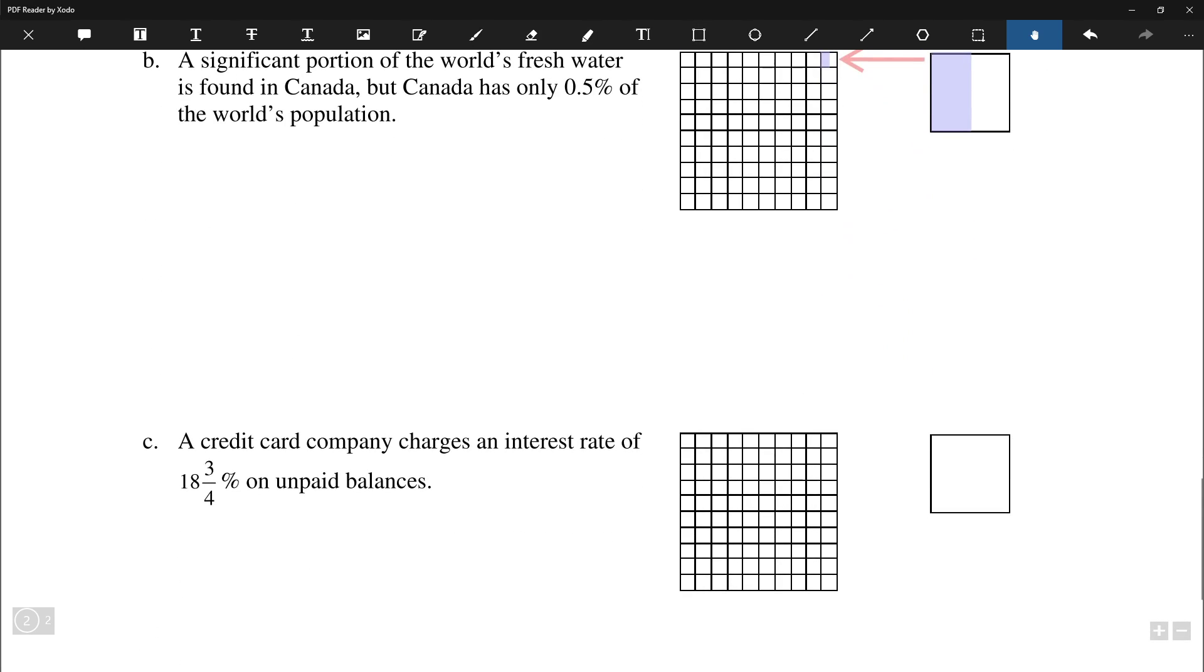Last part, a credit card company charges an interest rate of 18.75% on unpaid balances. So let's look at this one. Draw it this way. This is 10% and then we have 8% more. And then the last square, we're going to fill in three quarters of that one. And so, something like this. Again, we're just going to go ahead and draw a zoom in version of the same thing. So once again, this is going to be 18 and three quarters percent.